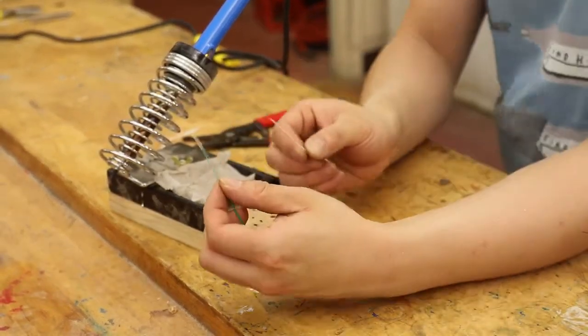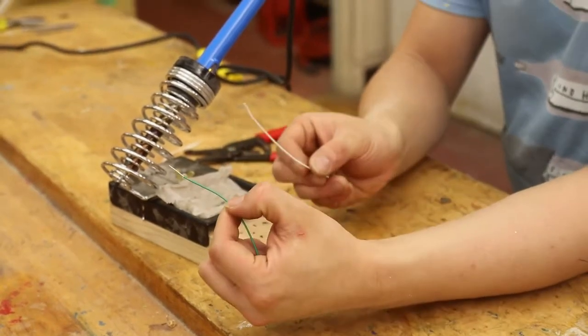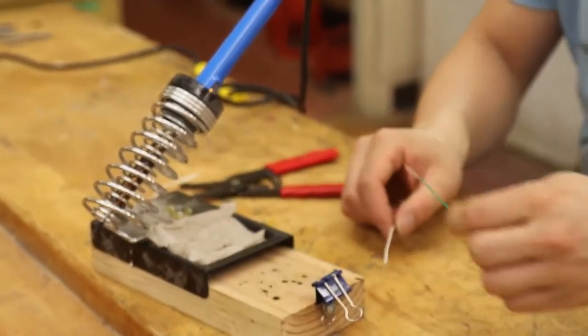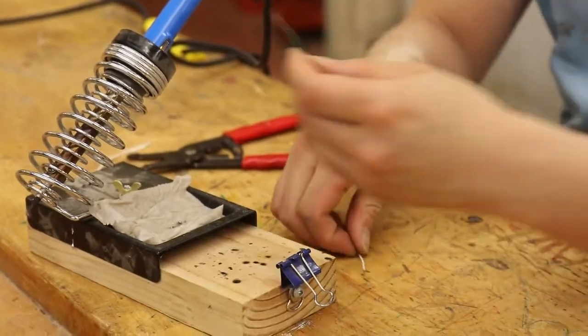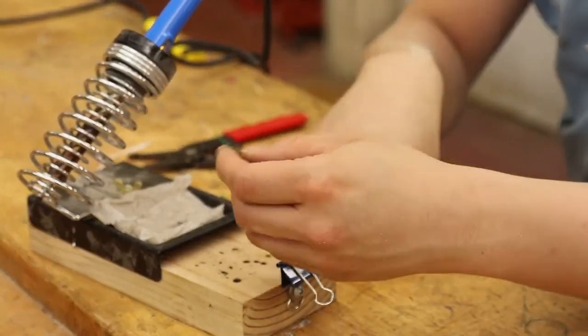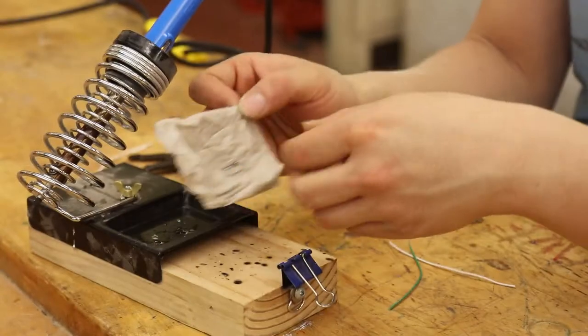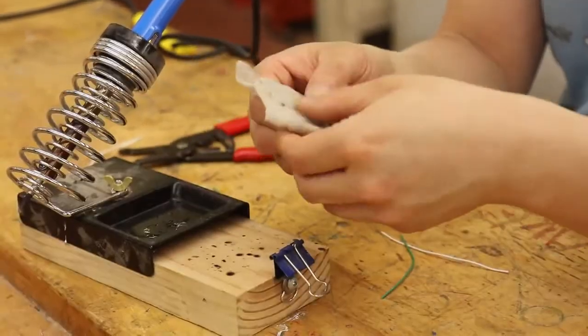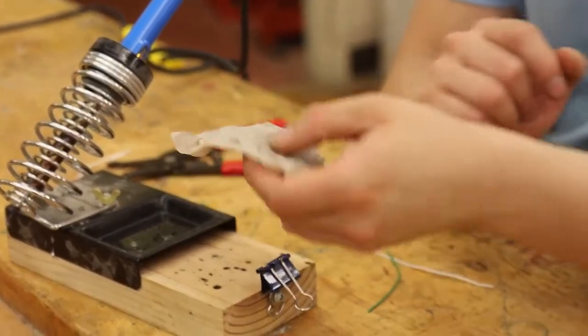So what I'm going to do is take this green wire and this white wire and I'm going to solder them together. While we're waiting for the soldering iron to heat up, it's a good idea to grab a paper towel and just get it moist. That's to clean up the soldering iron.